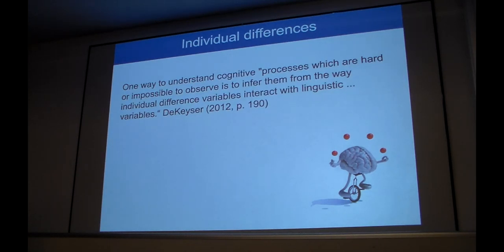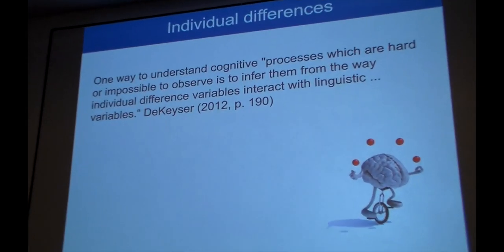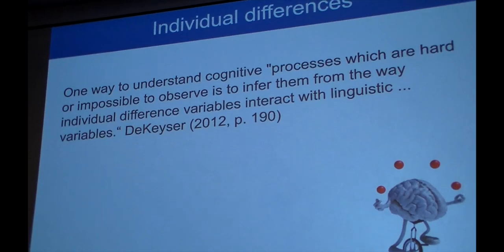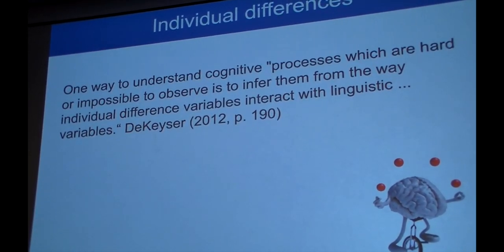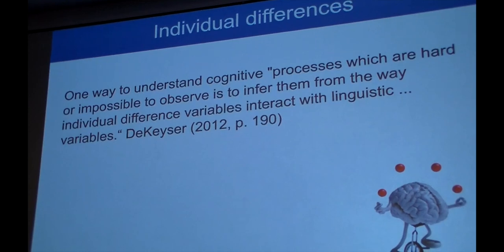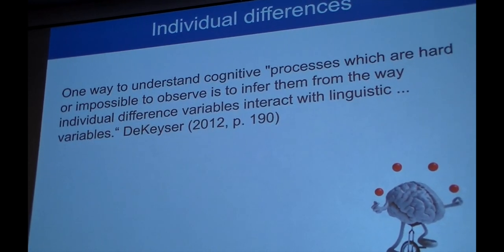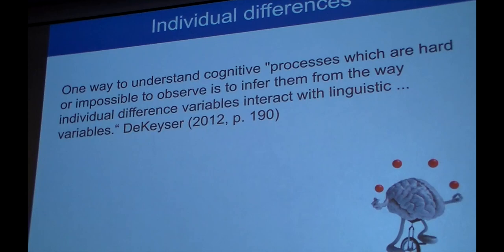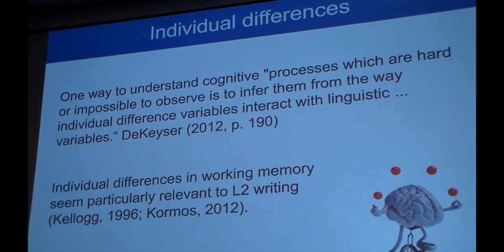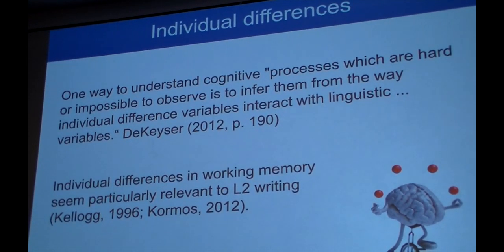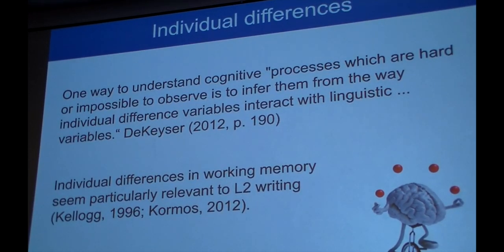Why working memory, and how does that relate to writing processes? There is this very prominent second language acquisition researcher, Robert DeKeyser. One way to understand cognitive processes, which are hard and impossible to observe, is to inform them from the way individual difference variables interact with linguistic variables. And when it comes to second language writing, one of the individual difference variables appears to be working memory, as has been put forward by first language researchers such as Kellogg, and also in the area of second language acquisition, Judith Kormos made that link.